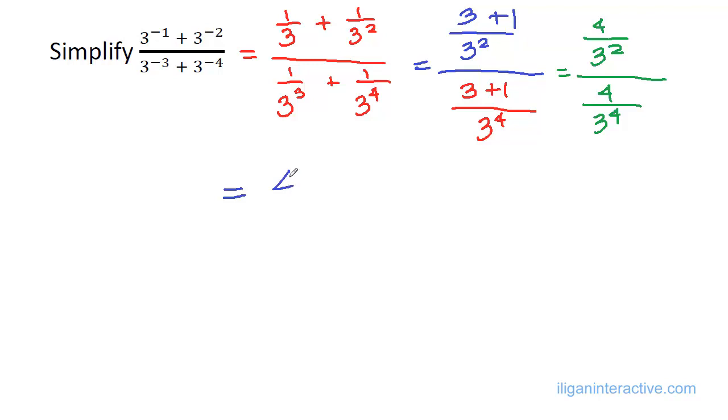So, how do you divide fractions? 4 over 3 squared, you multiply it by the reciprocal of the denominator. So this will be 3 to the 4th over 4.